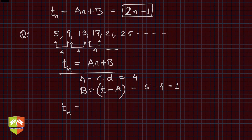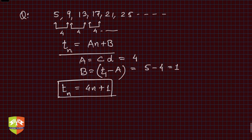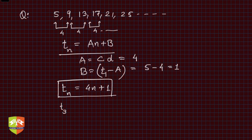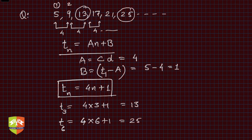Let's check whether it's true. t3, the third term, will be 4×3 + 1, which should be 13. And yes, the third term is indeed 13. What about t6? t6 should be 4×6 + 1 = 25, and yes it is 25.